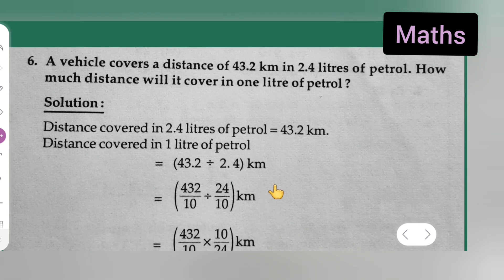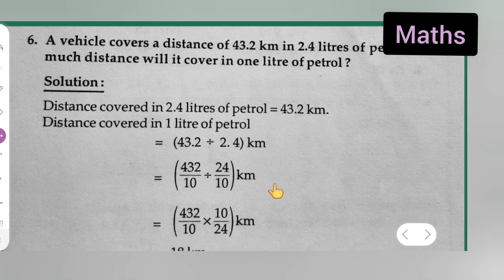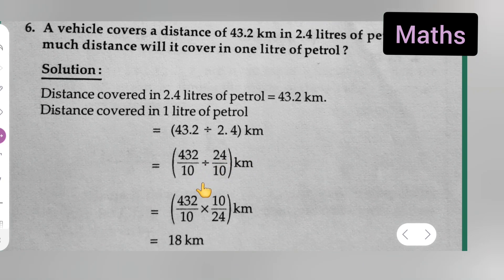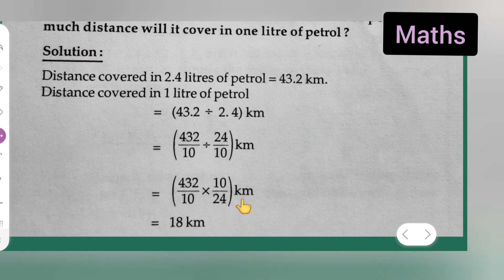Next, what we will do is, when we divide such things, 432 divided by 10 multiplied by 10 upon 24. Now, what is going to happen?